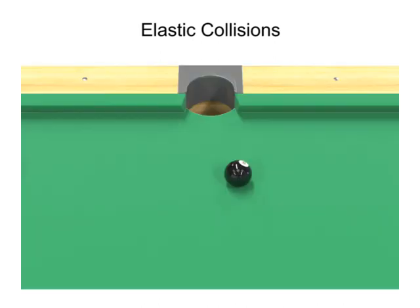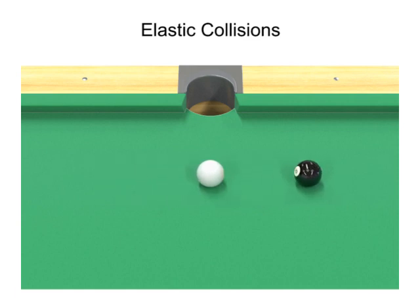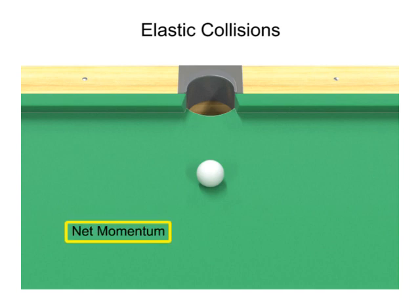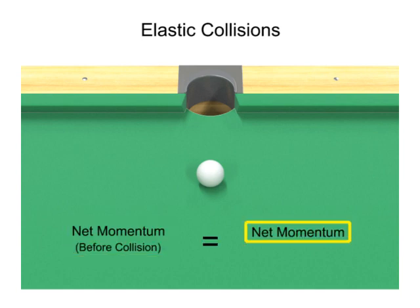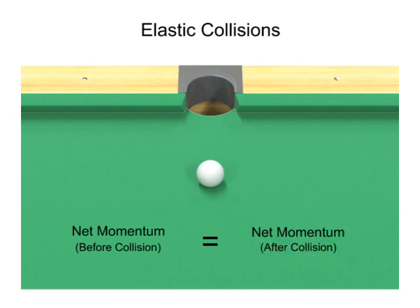When the cue ball hits the resting eight ball, it sets the eight ball in motion. Having transferred all of its momentum and kinetic energy, the cue ball comes to a rest. The net momentum of the cue ball before the collision equals the net momentum of the eight ball after the collision. Momentum and kinetic energy are transferred and conserved.